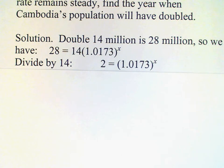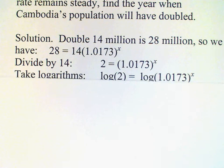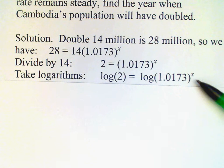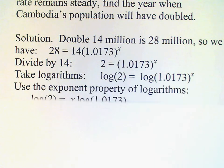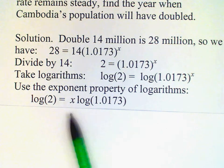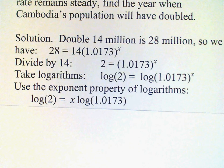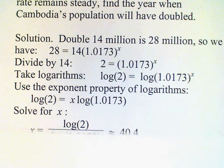Taking logarithms and then applying the exponent property on the right hand side, we have log(2) = x times log(1.0173). So log(2) and log(1.0173), these are just numbers you can calculate on your calculator, and then we can solve for x as the ratio of those two numbers. The answer that we get for x is about 40.4.